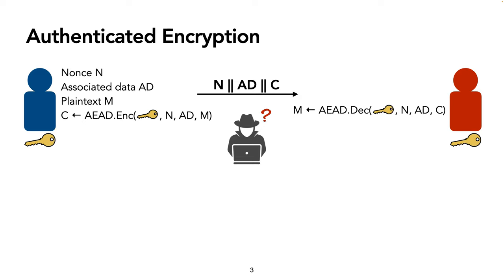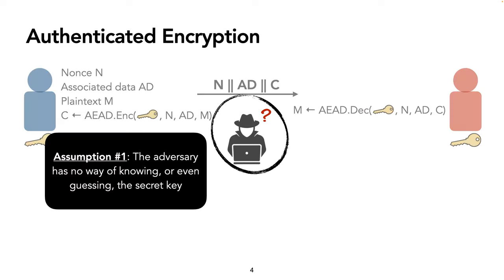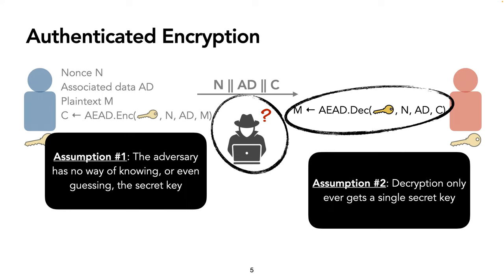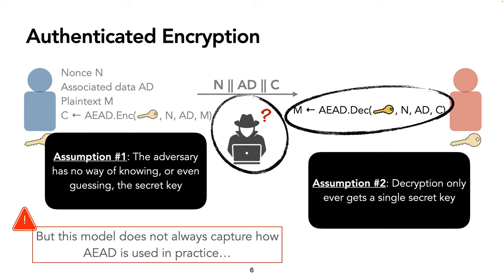Here we require that an attacker who does not know the secret key and sees the ciphertext will not be able to recover the plaintext. However, notice that there are a couple of assumptions being made with this model. The first assumption is that the adversary has no way of knowing or even guessing the secret key. Moreover, the second assumption is that decryption only ever gets a single secret key as input. But looking at how AEAD is used in practice, these assumptions do not actually always capture or fully model its use cases.